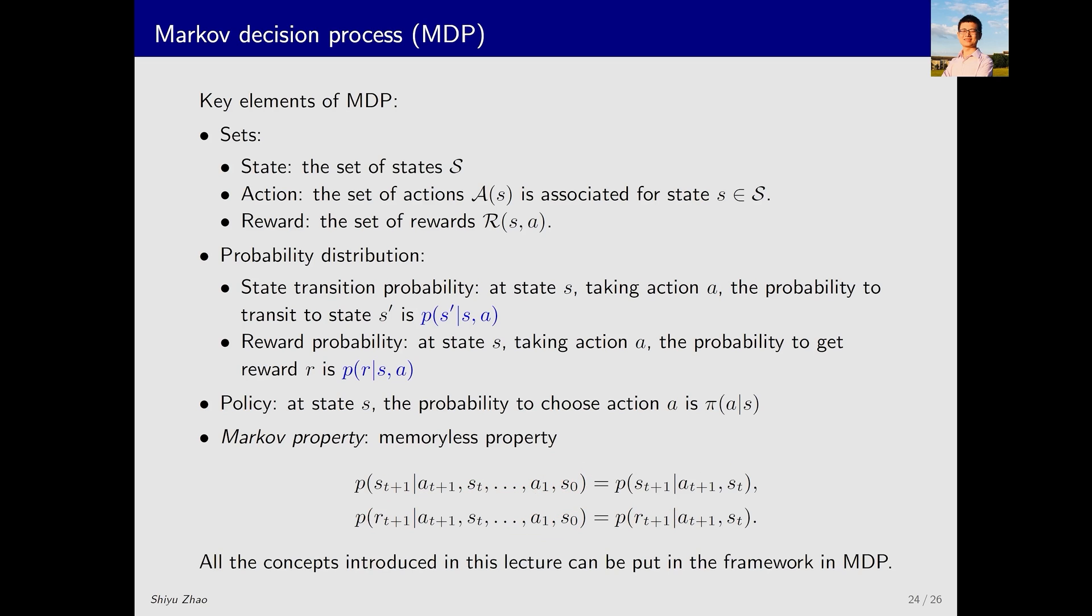All the concepts I have introduced in this lecture can be put in the framework of the Markov decision process. In the future, if someone asks you what a Markov decision process MDP is, I hope you can confidently explain. You can answer, a Markov decision process is a Markov decision process. While this may sound funny, what I want to say is that these three keywords succinctly describe the MDP. Markov corresponds to the Markov property. What does decision correspond to? It corresponds to the policy because making a decision requires a policy. Moreover, process refers to the transition from one state to another based on the actions taken. These aspects are defined by sets and probability distributions. So these three keywords effectively describe the Markov decision process.